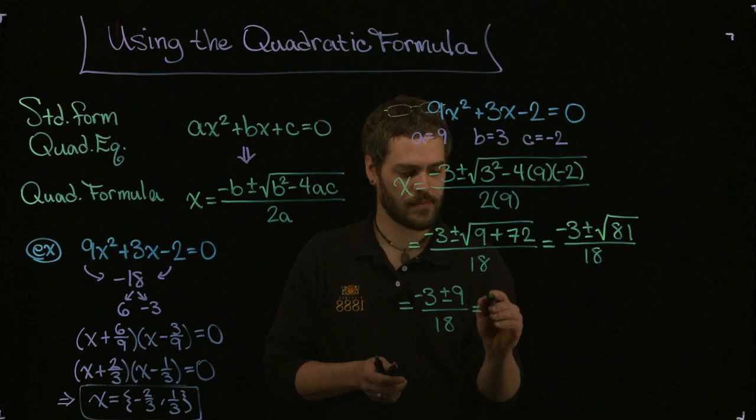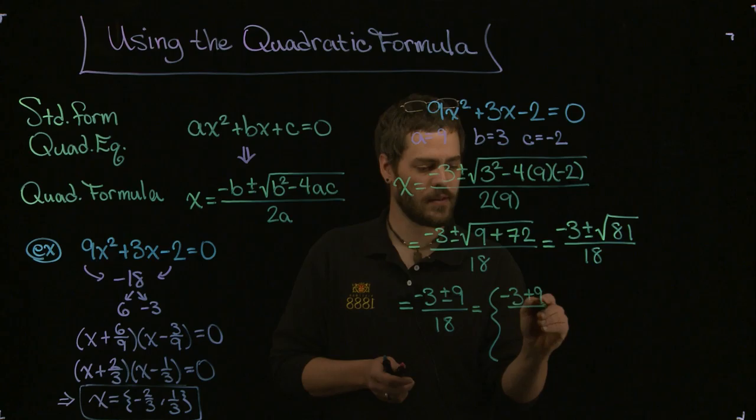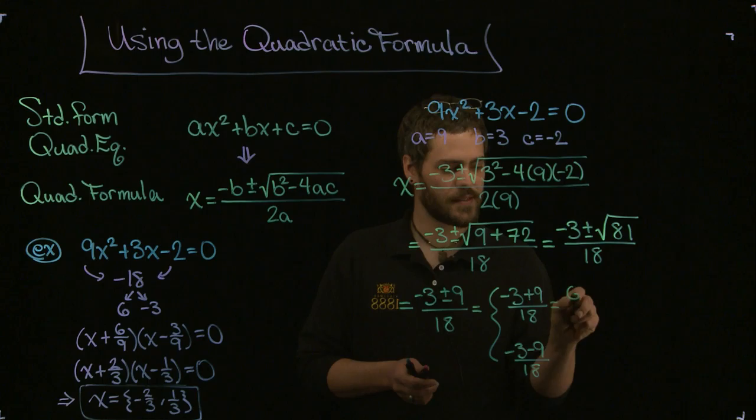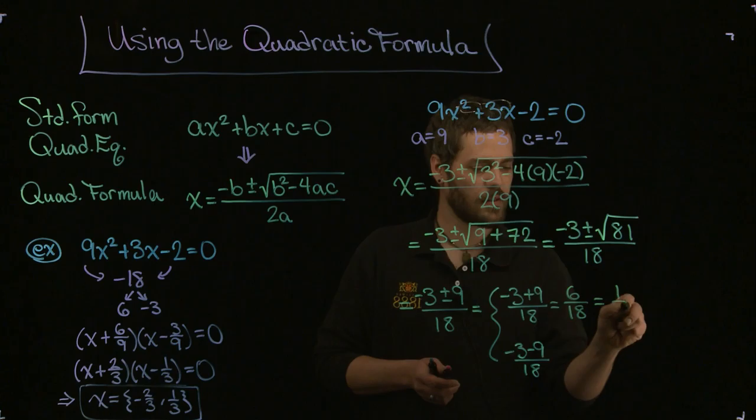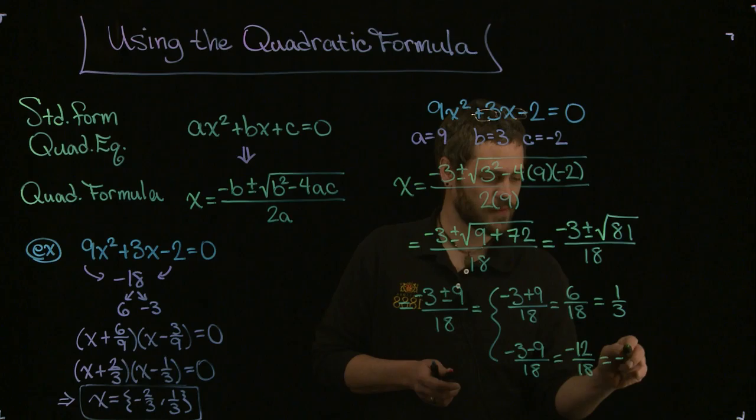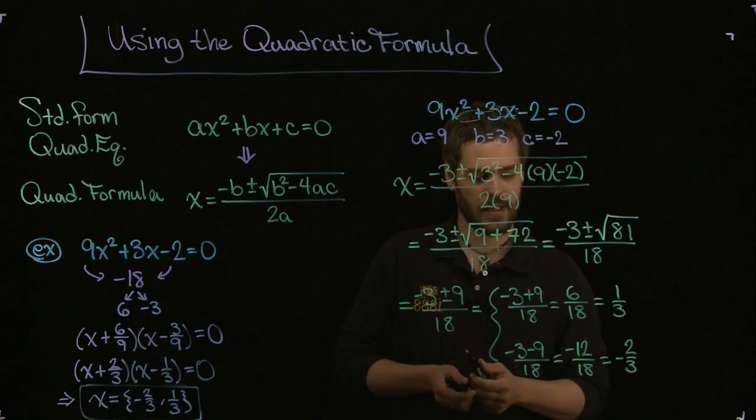At this point, I'm just going to say this equals two things. One of them is negative 3 plus 9 all over 18. The other one is negative 3 minus 9 all over 18. The top one, negative 3 plus 9 is 6 over 18, and that reduces both by 6 to 1 third. On the bottom, that gives me negative 2 thirds. There are the two solutions I ended up with from the quadratic formula.